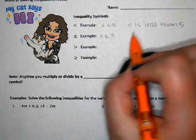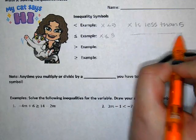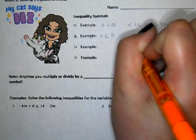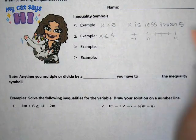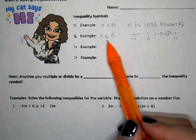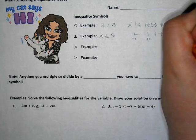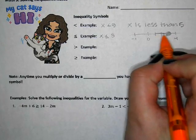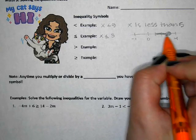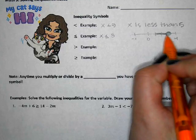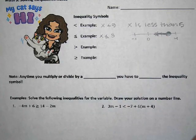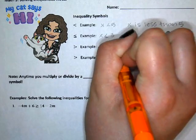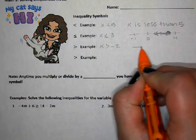For example, x is less than or equal to three. So this time we're going to draw on a number line. Anytime you draw on a number line, you draw a circle where the number is. If it can equal the number, you fill in that circle. So x is less than or equal to three.